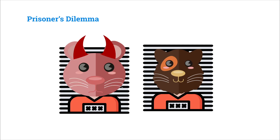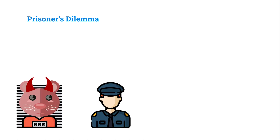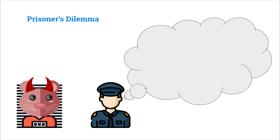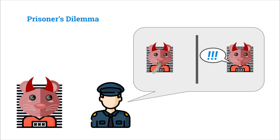Our criminals Mallory and Bob have just been caught and they've been sent to two different police stations. The cops tell them they were caught shoplifting vegetables from a store and can be put away on a misdemeanor charge for that crime. But they also highly suspect that Mallory and Bob robbed a bank earlier that week, though they don't have enough evidence to prove the felony. So the cop tells Mallory she has two options: stay quiet, or confess and give the cops enough evidence to prove they did rob the bank.